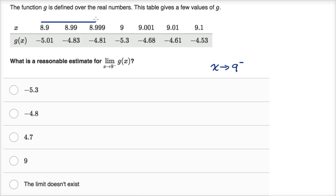I would look at these x values, which they seem to have chosen to do exactly that. They start at 8.9, then get closer to 8.99, then even closer to 8.999. They only want us to figure out the left-handed limit. At 8.9, g(x) equals negative 5.01. As we get closer to nine, we get to negative 4.83, then even closer, negative 4.81.